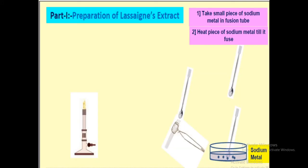In part one of preparation of Lassaigne's extract, we require a burner, a spatula, and a test tube, which is also known as sodium fusion tube, which is very small.